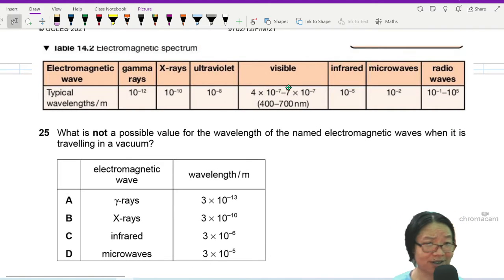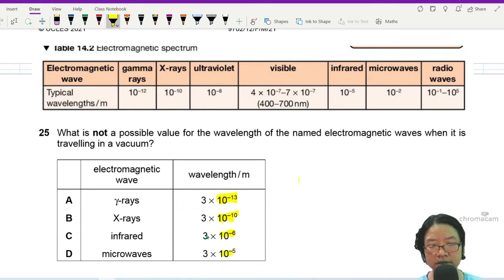The important thing here is to look at the order. The numbers in front - these numbers are not that important. What is important is the order at the back: negative 3, negative 10, negative 6, negative 5. The first thing we could do is think about which one is greater and which one is smaller.